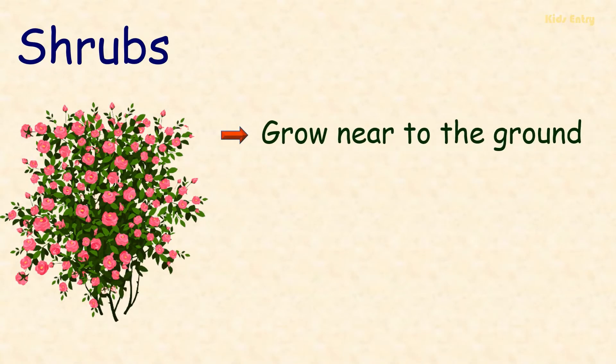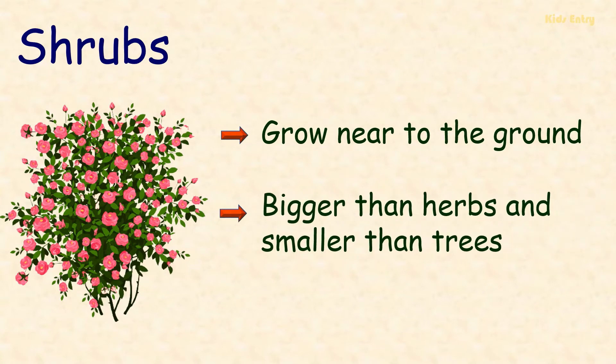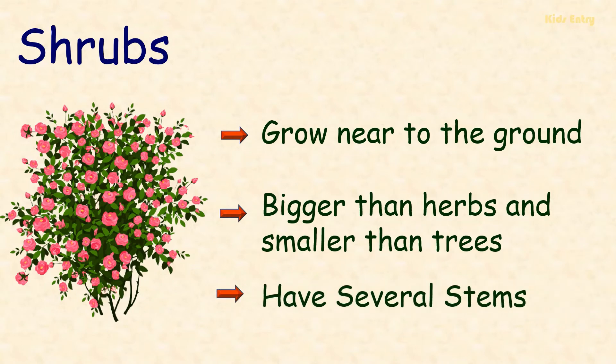Shrubs are woody plants which grow near to the ground. Shrubs are bigger than herbs and smaller than trees. They have several stems.